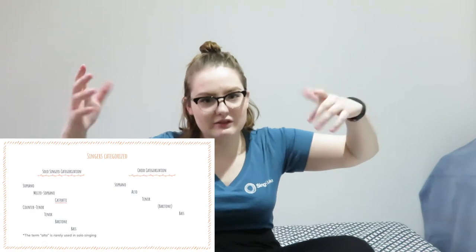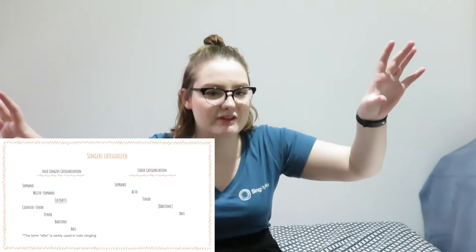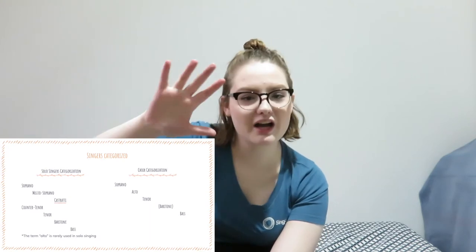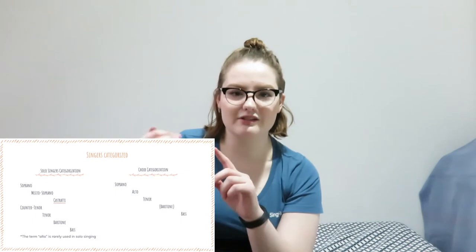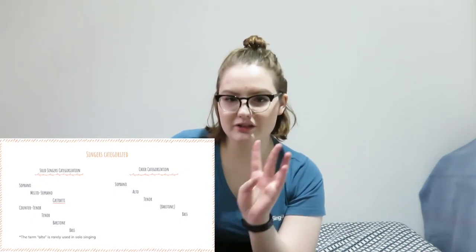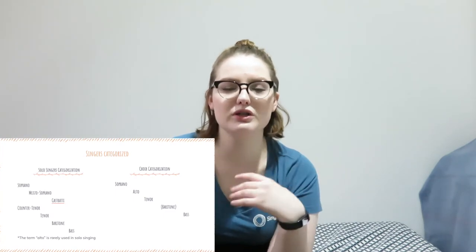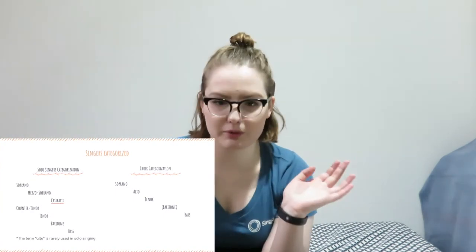Within classical music, it is divided in two: the choral side and the solo side. As most of you know, there are five general categories for choir singing: soprano, alto, tenor, baritone, and bass. Within each, you can have soprano one, two, three, and so on depending on how many parts there are.